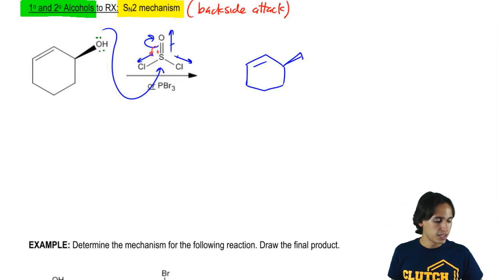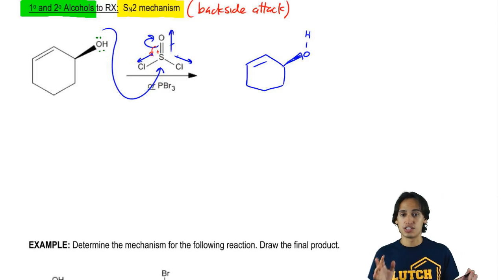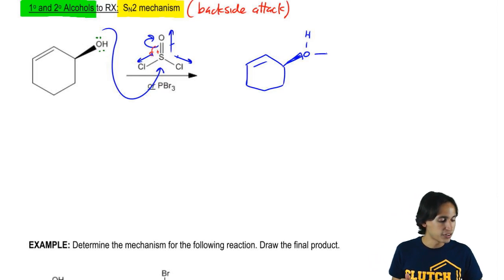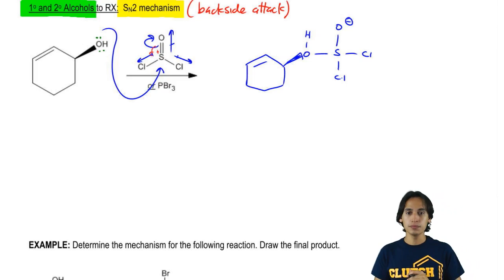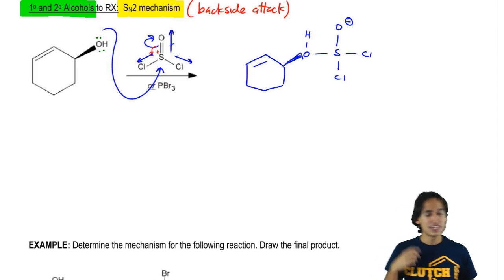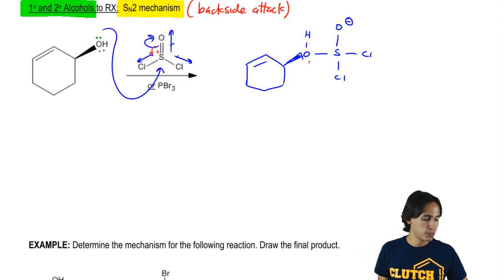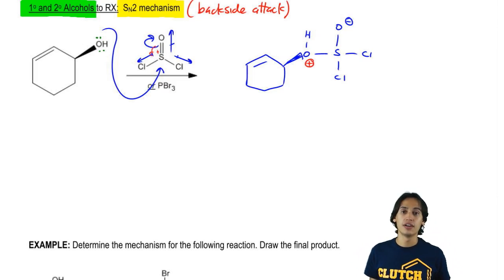What I wind up getting is I wind up getting O, H. That H is still there from before, but now that's attached to a sulfur, an O negative, a chlorine and a chlorine. Now in this next step – oh, by the way, we're forgetting a charge. There should be a positive charge right there because oxygen doesn't like having three bonds. Now what's the next step?